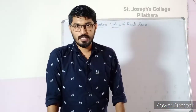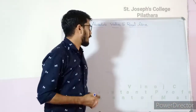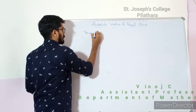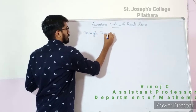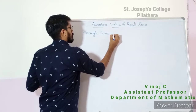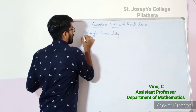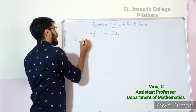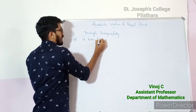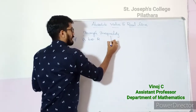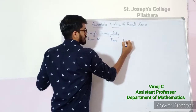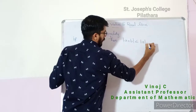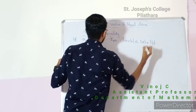Next, we are going to discuss the triangle inequality. Triangle inequality statement: if a, b belong to ℝ, then |a + b| ≤ |a| + |b|.